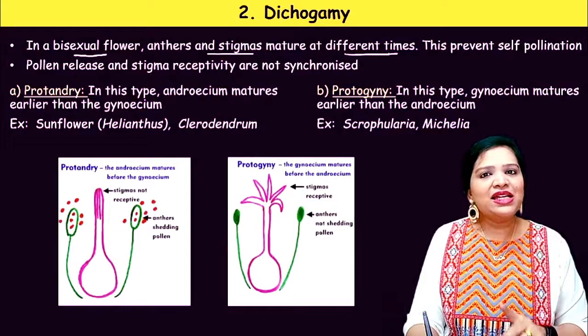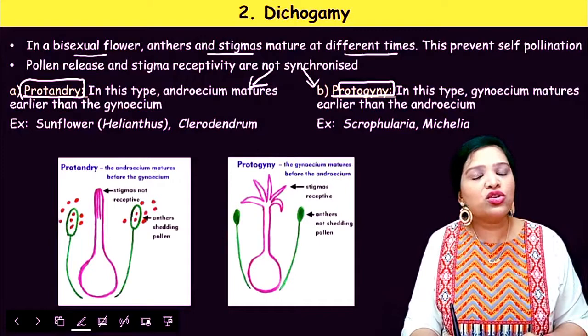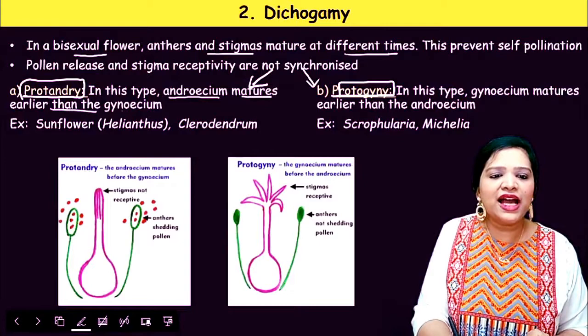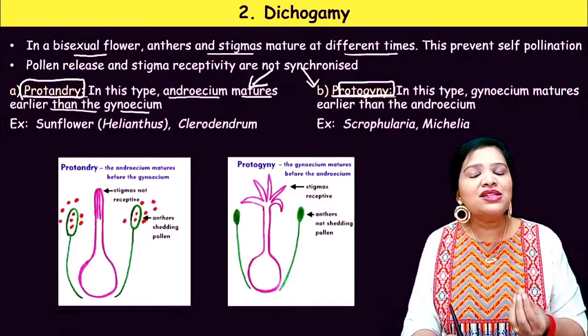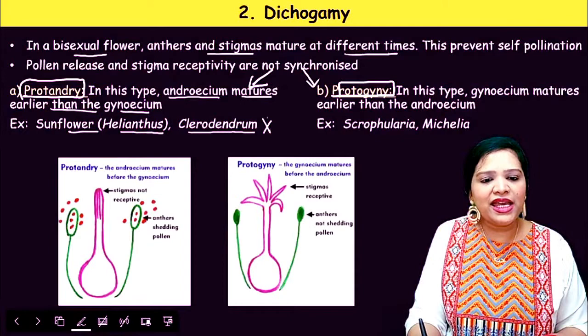Dichogamy has two types. The first is protandry, where the androecium (male part/stamen) matures earlier than the gynoecium (female part). Examples of protandry include Helianthus (sunflower) and Clerodendrum.